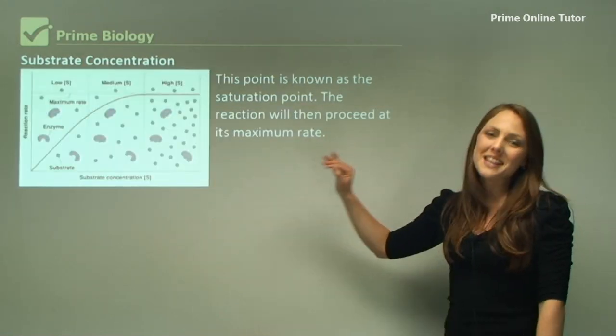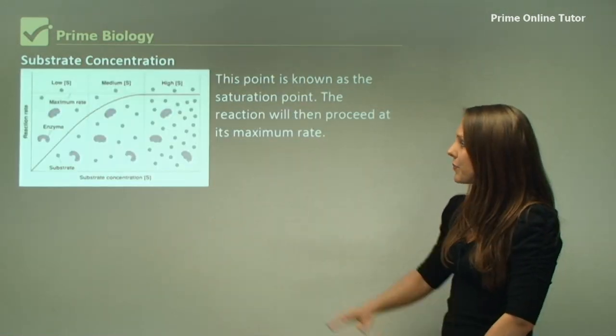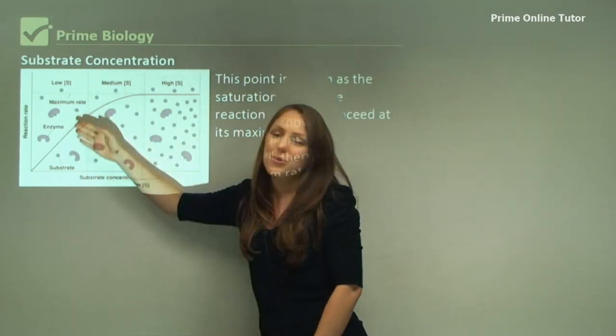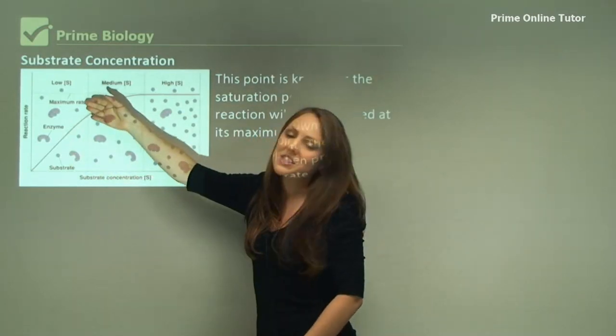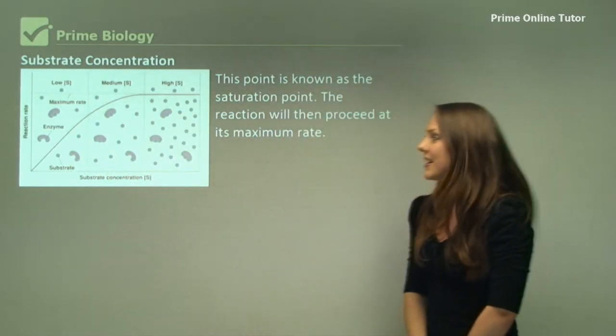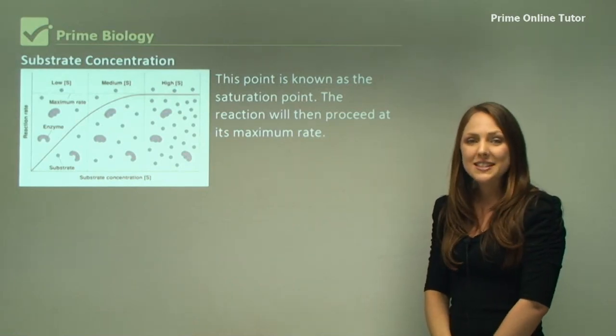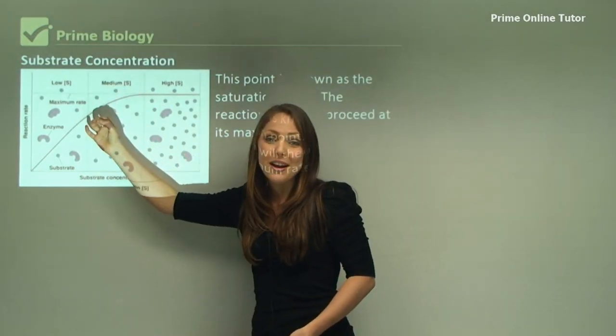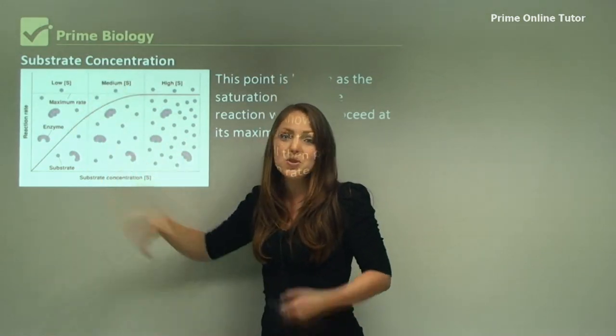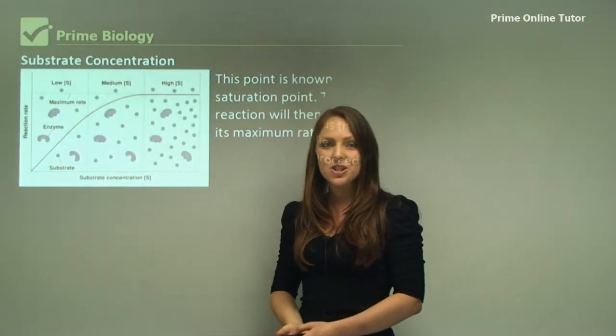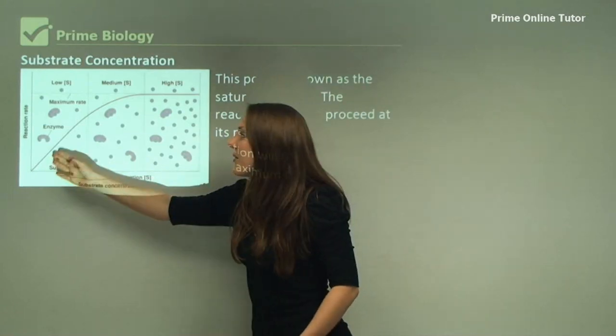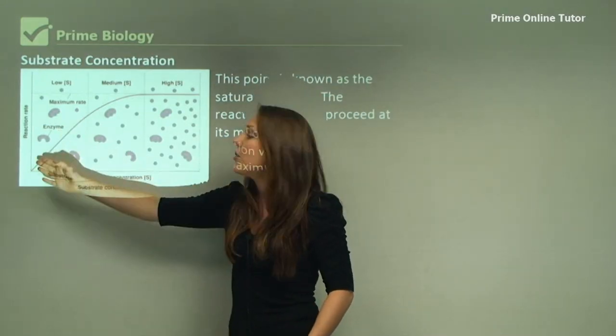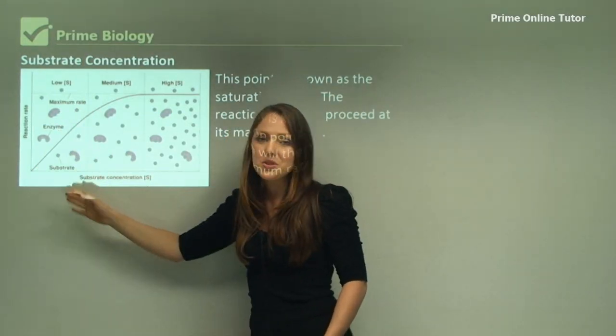So this is a fantastic graph for you to understand this. Here we go. We've got three enzymes here and we've got a small amount of substrate, but only one enzyme is taken up. That's because with more substrate, there will actually be more enzymes taken up just by chance that the reaction will actually happen.